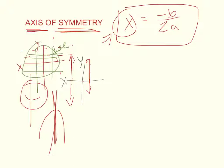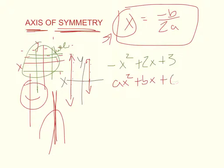Let's look at an equation. Let's say the equation given is negative x squared plus 2x plus 3. As a reminder, the standard form is ax squared plus bx plus c. All we do is take what we know and plug it in to find what we don't know.